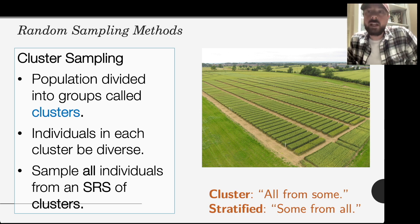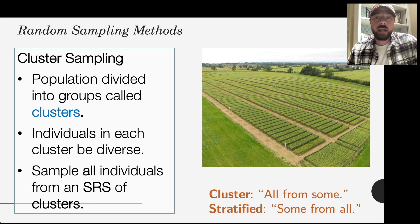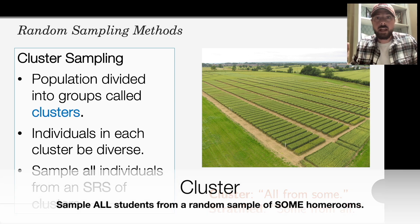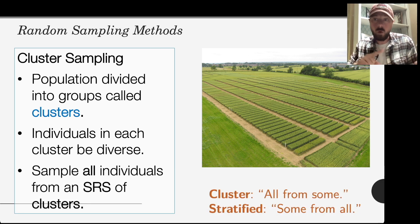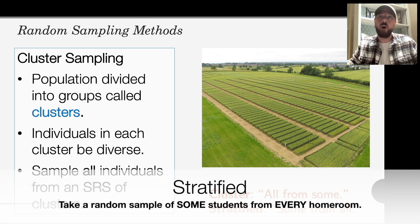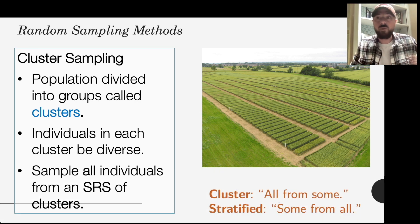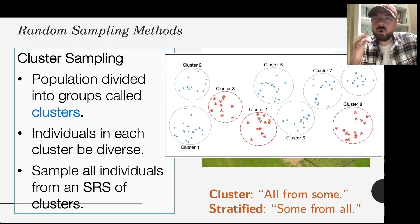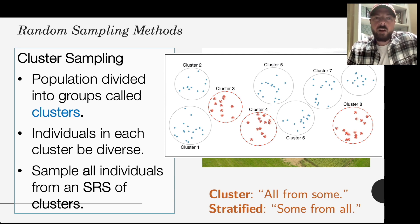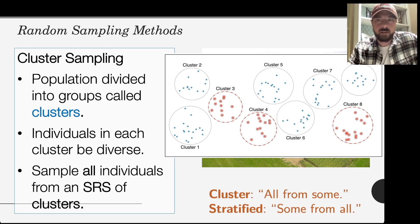Going back to the homeroom example — if I wanted to do a survey at Central High School, I could randomly select some homerooms and survey everyone in those homerooms: that would be cluster sampling. Or for stratified, I would go to every single homeroom and randomly pick a couple of kids from each. Some from all homerooms is stratified; all students from some homerooms is cluster. In the cluster sampling image, unlike stratified, we didn't get some from every group — we selected certain groups at random and sampled everyone in them.